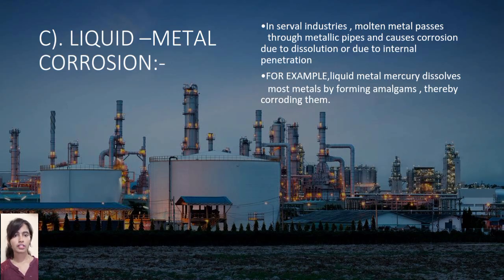Liquid metal corrosion. In several industries, molten metal passes through metallic pipes and causes corrosion due to dissolution or inter-alloying. For example, liquid mercury dissolves most metals by forming amalgams, thereby corroding them. So this covered the three main types of chemical corrosion theory.